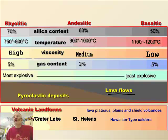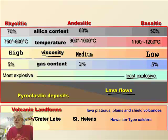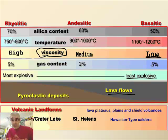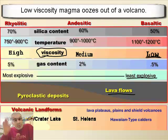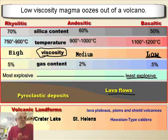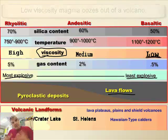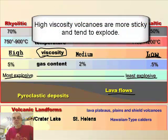If the lava is thicker, it tends to explode — that's kind of the whole point here. The least explosive volcanoes are the ones with low viscosity. Low viscosity means they flow and ooze — it's an oozy volcano. A more explosive volcano has high viscosity, so the pressure builds up and it blows up instead of oozing out.